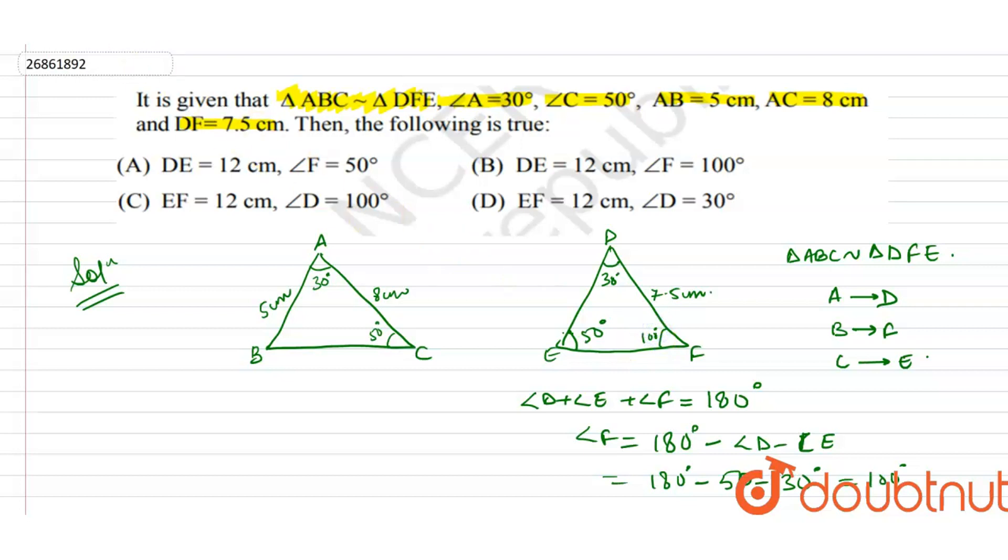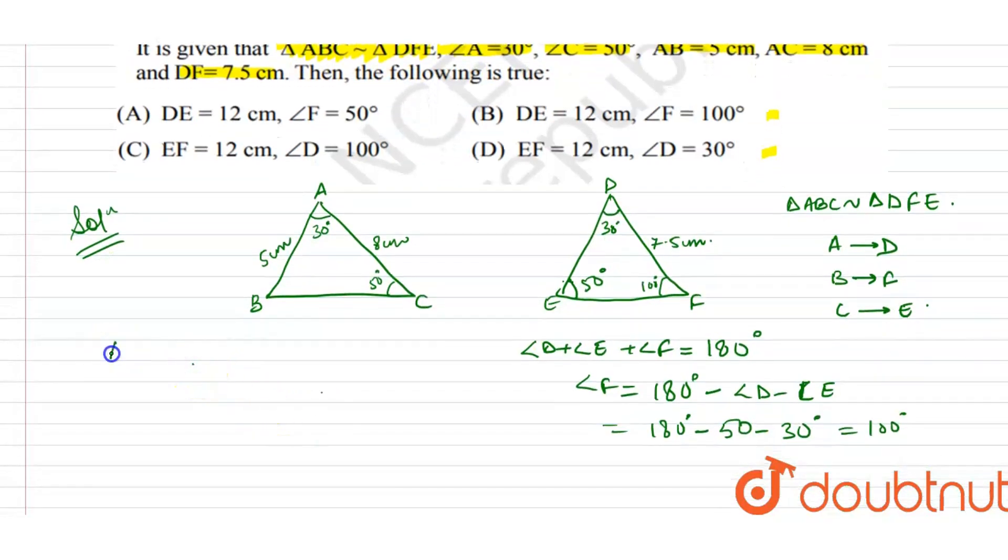So angle D is 30 degrees and angle F is 100 degrees. Options B and D are correct. Now what will the ratio be?